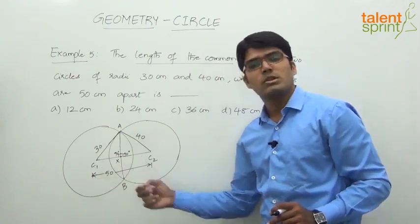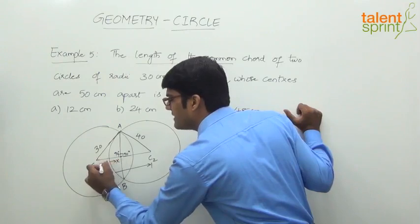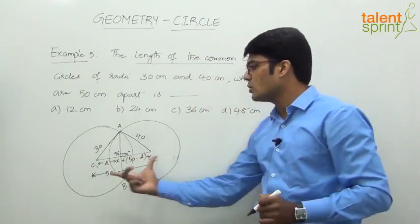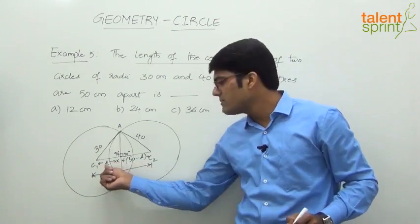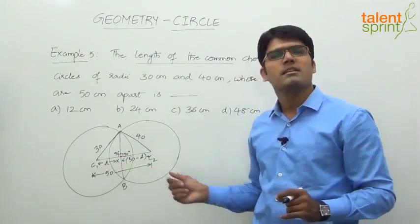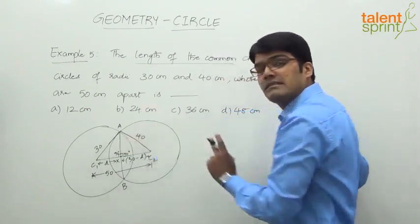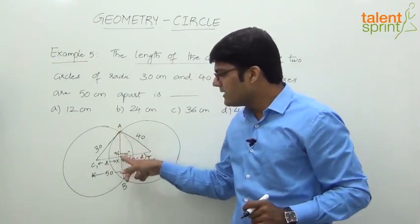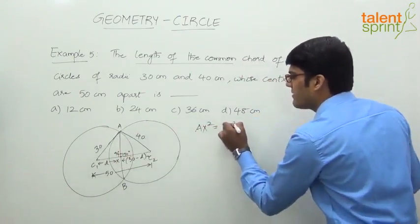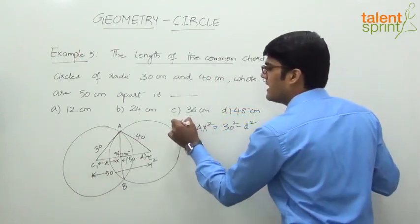The total distance between the two centers is 50. Let's assume C1 to X is d, so C2 to X is 50 minus d — since d plus (50 minus d) equals 50. In both right-angle triangles, AX is common. From triangle AX-C1, AX squared equals 30 squared minus d squared, where 30 is the hypotenuse and d is the base.